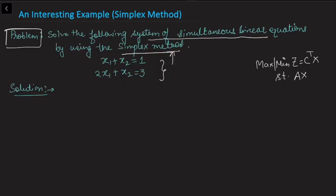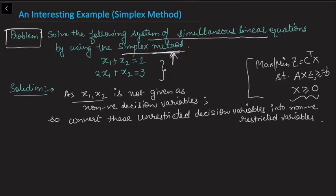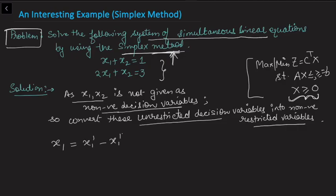The standard format has an objective function subject to certain constraints — greater than, less than, or equal to — with conditions on the decision variables. Here we don't have any such format: there is no condition on the decision variables and no associated objective function. But we can still apply simplex method because it is mostly based on row operations. Since x1 and x2 are not given as non-negative, we need to convert these unrestricted decision variables into restricted ones.